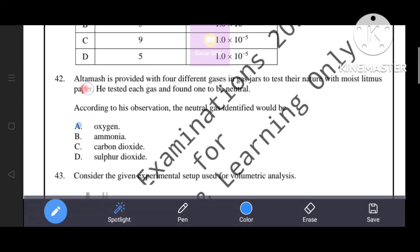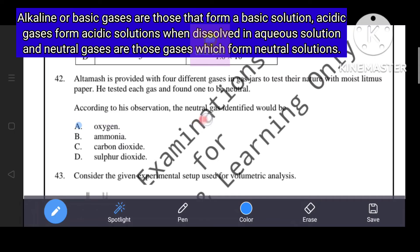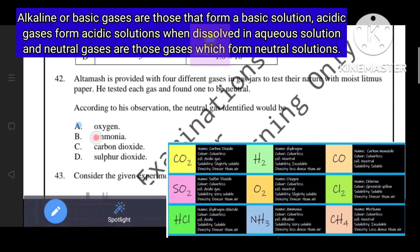Next question. Altamash is provided with 4 different gases in gas jars to test their nature with moist litmus paper. He tested each gas and found one to be neutral. According to his observation, the neutral gas identified would be... As you know, alkaline or basic gases form basic solution, acidic gases form acidic solutions, and neutral gases form neutral solution. Oxygen is neutral, ammonia is alkaline gas, carbon dioxide is acidic gas, sulfur dioxide is also acidic gas.